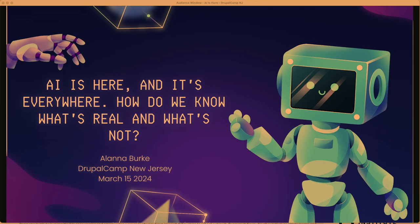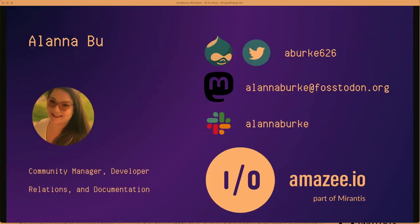Let's get started. Hi everyone, I'm Alana Burke and this is "AI is here and it's everywhere: how do we know what's real and what's not?" My pronouns are she/her. I work at Amazie.io on the Lagoon team — Lagoon is our application delivery system — as community manager. I do developer relations and documentation. You can find me on Drupal.org, Twitter (I will never call it X) as abark66, and also on Mastodon and Drupal Slack as Alana Burke.